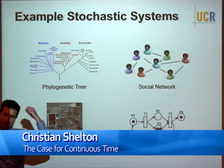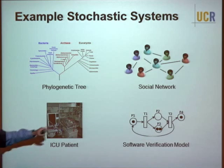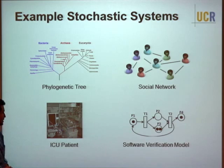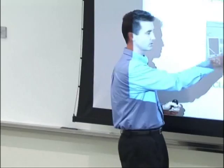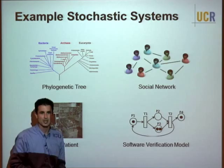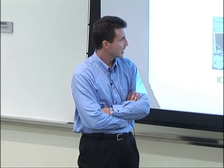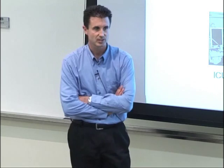Let me give you some examples of asynchronous stochastic systems: phylogenetic trees, where different species change at different rates over time; social networks; ICU patients, which is a large stochastic system you'd like to reason about and control; and software verification. What's interesting about all these systems is that they evolve naturally in continuous time, with discrete events that can change rates drastically from component to component.